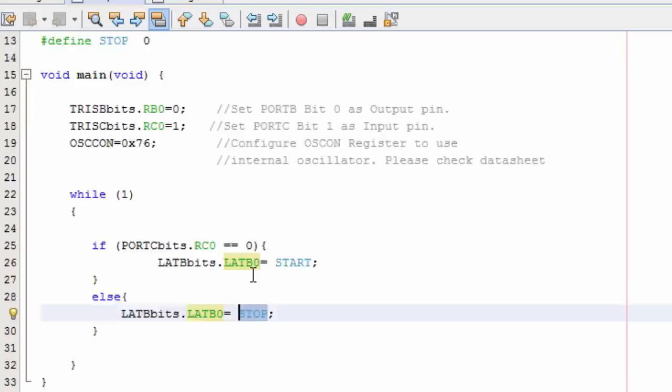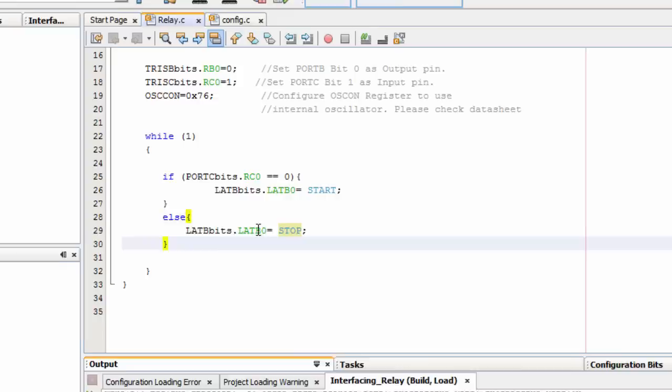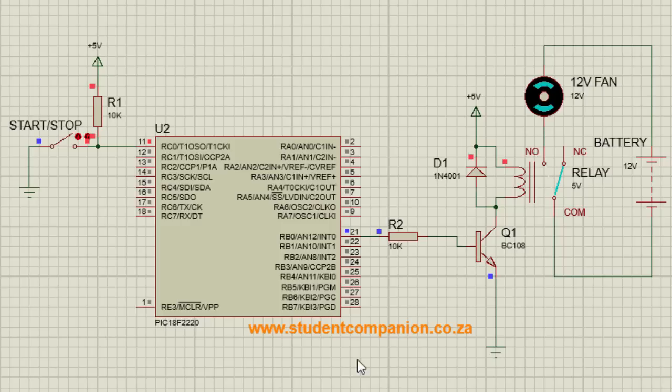Let us build our project. Build. Build successful. Let's go to our circuit design. We have already loaded our hex file. Start the simulation. The switch is open. We have 0 on RB0. Our transistor is off. Our relay is de-energized.